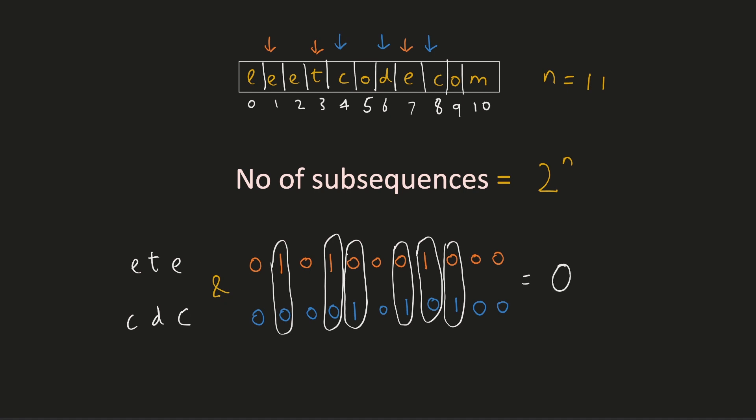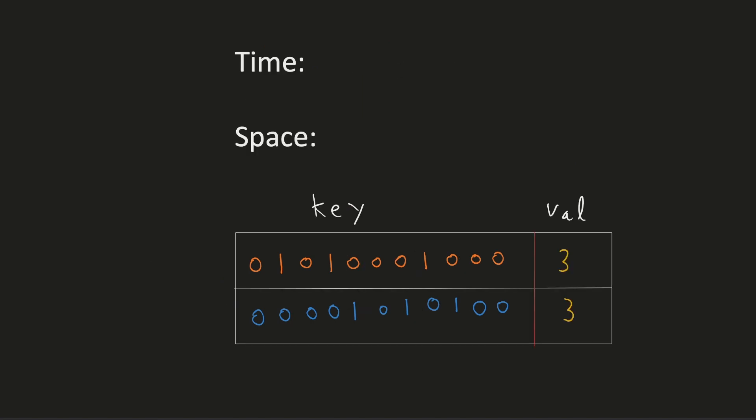Hence we could store all the palindromic subsequences, and then for each one of them, we have to check with the others if they are disjoint or not. If they are disjoint, we could find the product of their lengths and keep track of the maximum product found so far. To store all the palindromic subsequences, we could use a hash map where the key would be the bitmask and the value will be the length of the subsequence. We could also use a hash set instead, but by using a hash map we are storing the length, making our solution a little easier to implement.